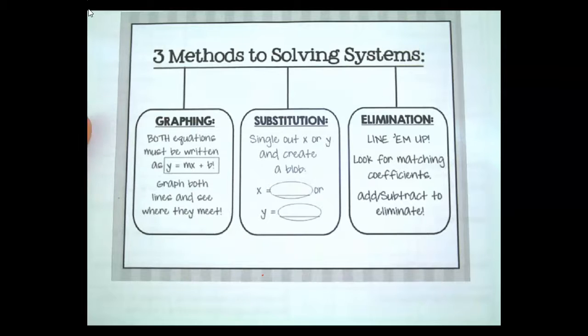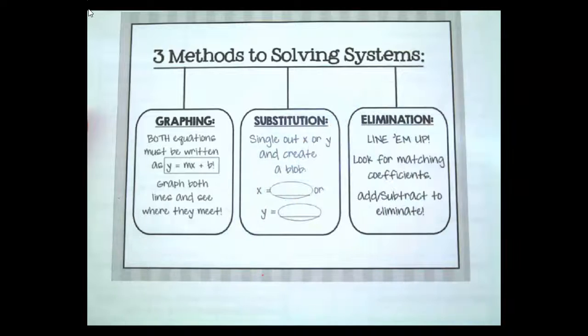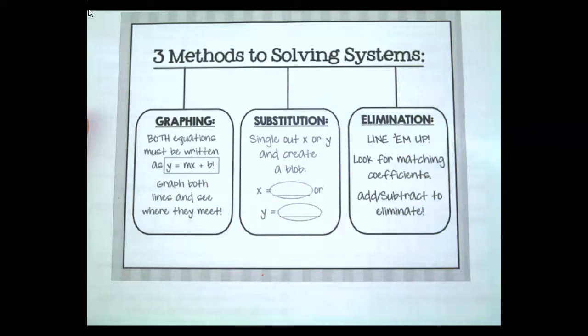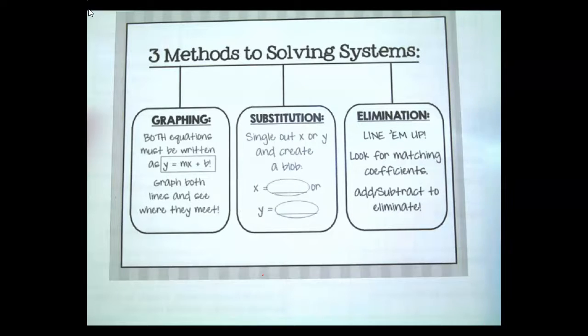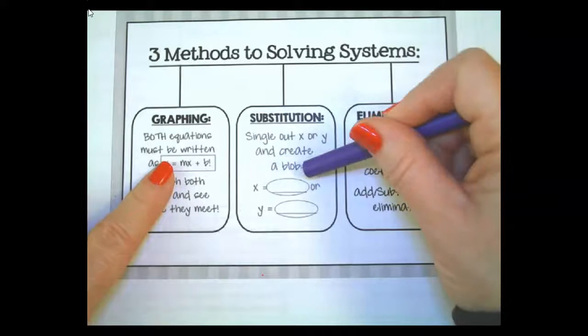Substitution is when you single out an X or Y and you create a blob. And we'll get into that in a little bit. So what you're doing is you're just substituting your value in. I love elimination because you line them up and you're looking for matching coefficients that you can cancel out where you can eliminate. And so that's a super easy one. I like this one and obviously this one the best. This one's a little more difficult. So let's get going.